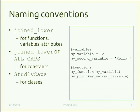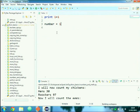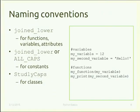Naming conventions: variables are written in lowercase. Multiple words are joined by an underscore — for example, `my_number`. This applies to variables and functions too, like `my_function` and `my_second_variable`. For constants, write all capitals with underscores. For classes, use StudyCaps — each word starts with a capital letter, joined without any separator.